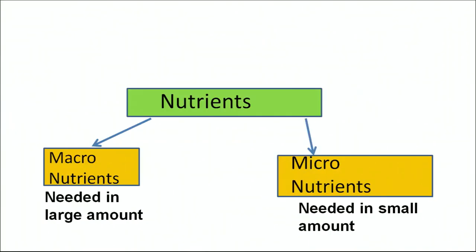Nutrients. Whenever you purchase any food item from the market and look at the back of the package, the detail of the nutrients present in the food are given — such as how much energy, carbohydrate, proteins, minerals, vitamins, etc. it contains. These are the nutrients found in food that keep our body functioning. Nutrients are divided into two major categories: macronutrients, which are required in large amounts, and micronutrients, which are required in small quantities.